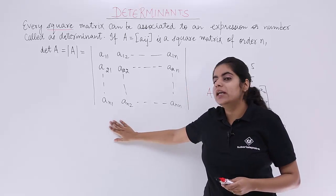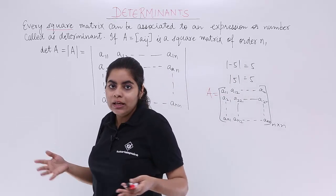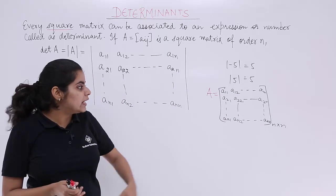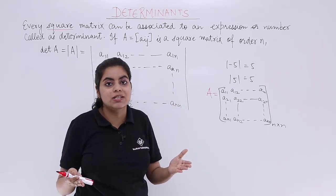The value of determinant would be fixed. You will get a number or an expression like 5 is the value, 10 is the value. But in case of matrices you never got a number—it was always a matrix as a whole.